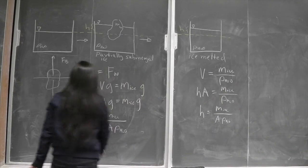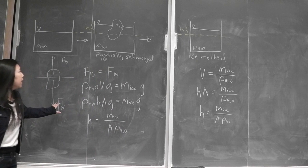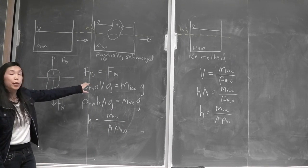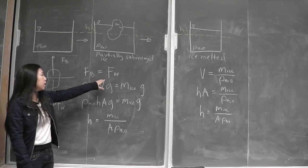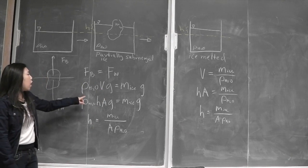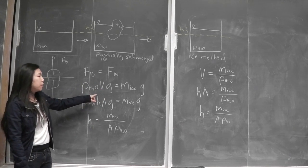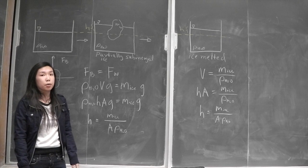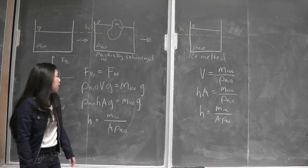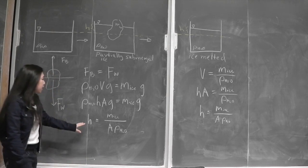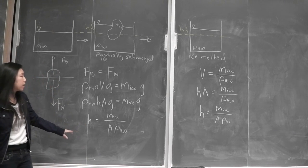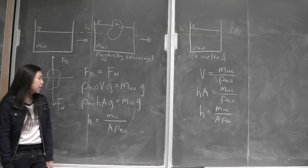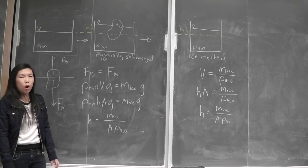So first, we can do a force balance on the partially submerged ice, where the buoyant force is equal to the weight. So density of water times volume times gravity is equal to the mass of the ice times gravity. And from that, we can solve for the height, which ultimately equals mass of the ice divided by area times density of water.